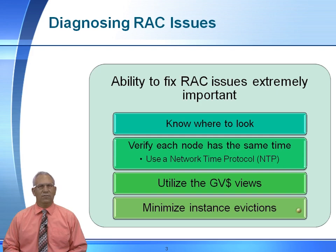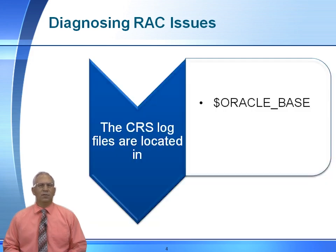When it couldn't find it, it performed an eviction. An eviction is not a node deletion — it just means I'm looking for you and you're not there, so I'm going to evict you. Once you fix the problem, it can be brought back into the Rack environment.